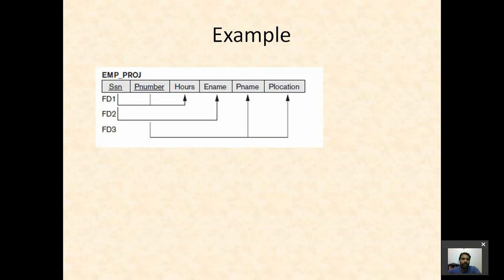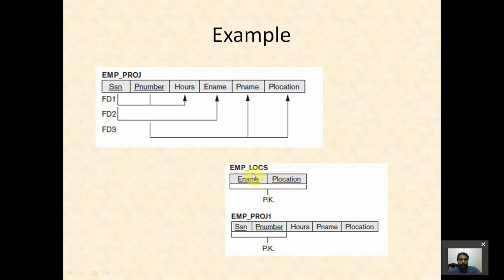For example, consider a relation EMP_PROJECT consisting of SSN, project number, hours, Ename, Pname, and Plocation — a bad relation because employee and project attributes are mixed. To make it into good relations, we decompose it into two tables: one storing Ename and Plocation (EMP_LOCS), and another EMP_PROJECT table. In top-down design, if we have a relation we try to decompose it into two or three good tables. But these two decomposed tables can also be bad.